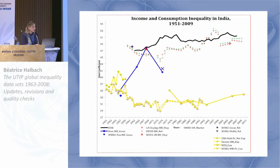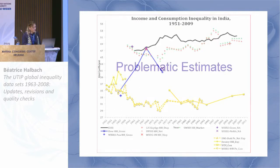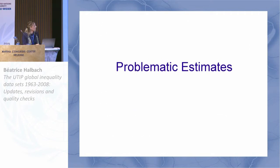For India, most of the other data out there tends to be consumption-based, but the one measure published by the LIS is only about two Gini points off from where we are, so that's a good sign. We also have a few cases where the EHI estimate tends to be problematic and in these cases our estimate is generally too low. These include Brazil, South Africa, Colombia, and Thailand.